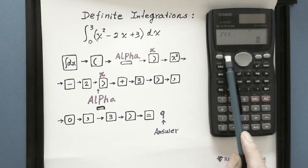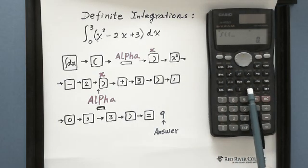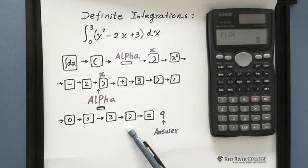So that's why we go to the alpha button, which is red, and hit the bracket. Then you have x.